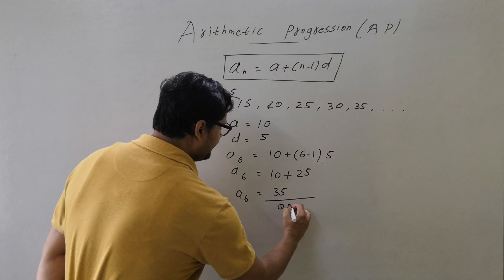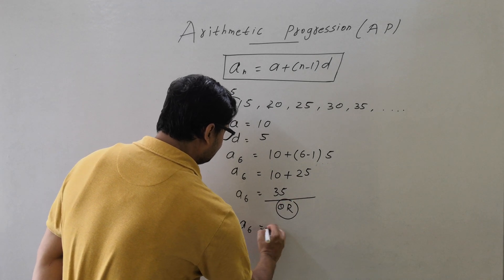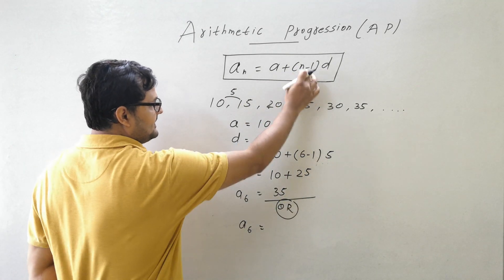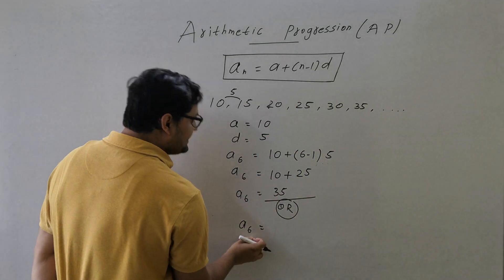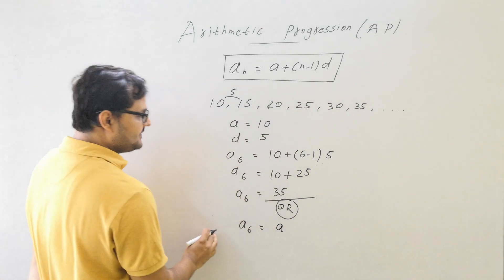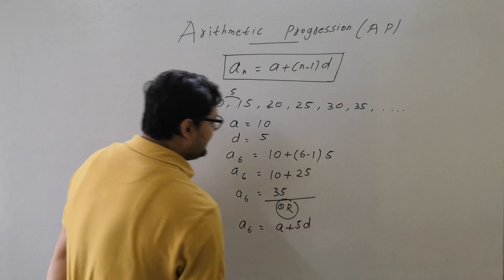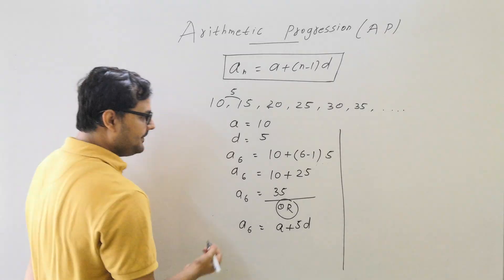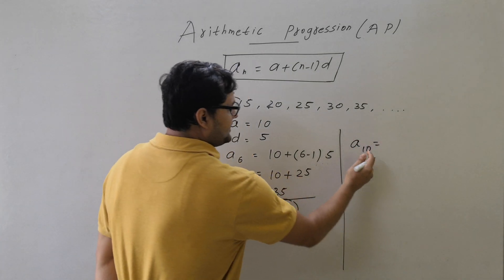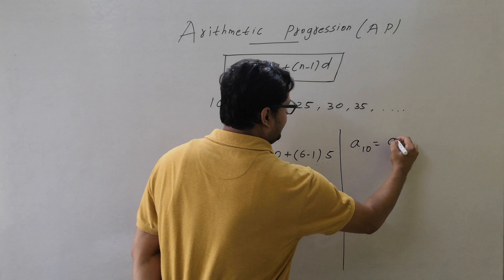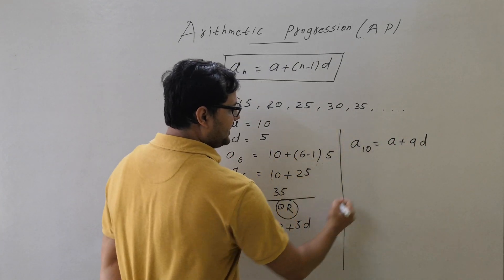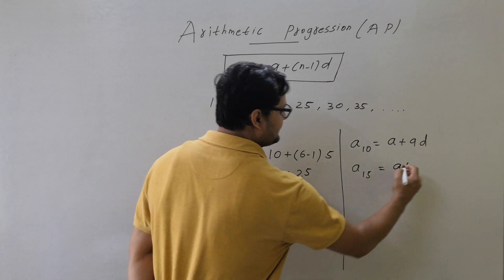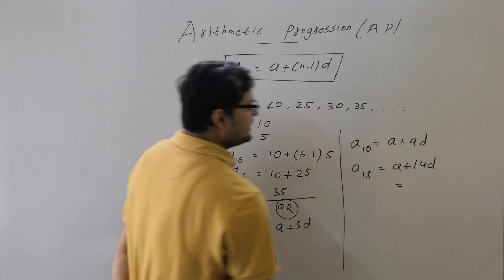A shortcut: for the 6th term, 6 minus 1 is 5, so we write A + 5D directly. Similarly, A10 = A + 9D, and the 15th term = A + 14D. In general, the nth term means we subtract 1 from n to get the multiplier of D.